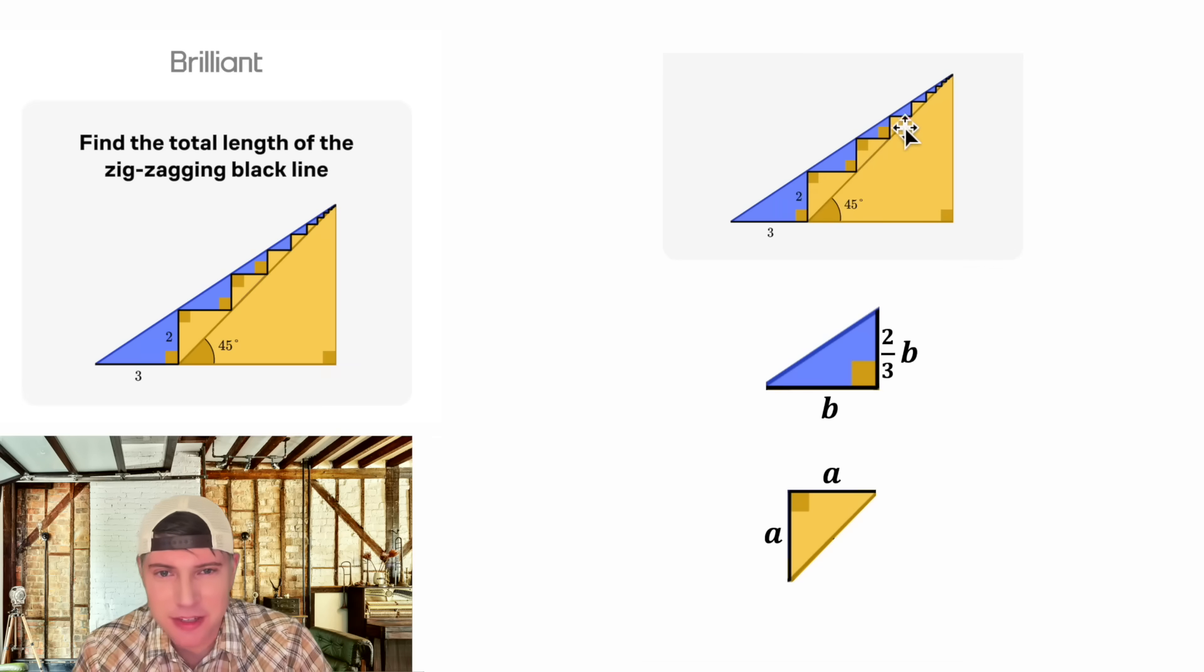Let's start finding some of these lengths. If this side is two, this side will also be two. Then in this blue triangle, this height will be two-thirds of this base. And two times two-thirds is four-thirds. And then this side equals this side, this will also be four-thirds. And that pattern is going to continue forever.